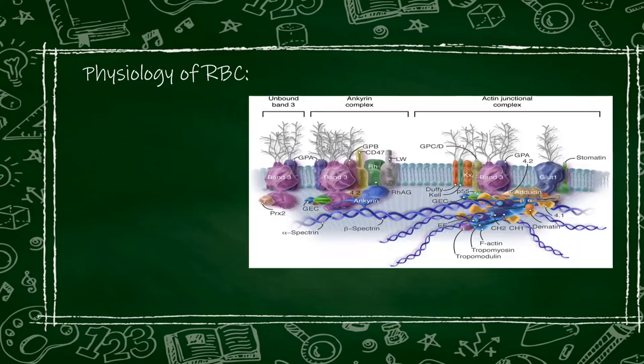Before proceeding to pathology or clinical features, let's briefly look at RBC membrane physiology. If you can see this diagram, several proteins are shown — such as band 3 protein, ankyrin protein, GEC protein, and many other structures — these are all proteins.